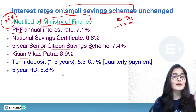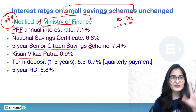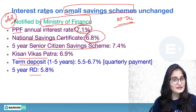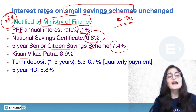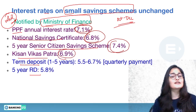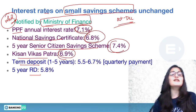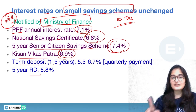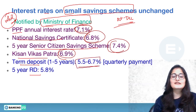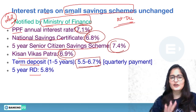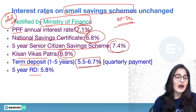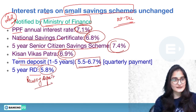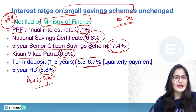The current interest rates are: PPF at 7.1% per annum; National Savings Certificate at 6.8%; Senior Citizen Savings Scheme (5-year) at 7.4%; Kisan Vikas Patra at 6.9%; Term Deposits (FDs for 1 to 5 years) at 5.5% to 6.7% quarterly returns; and 5-year Recurring Deposit at 5.8%.